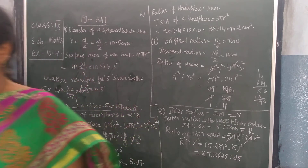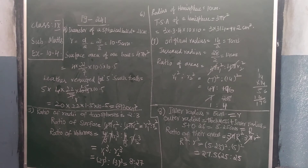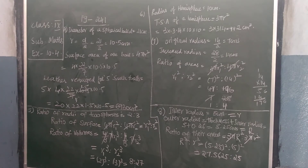7th problem, see children. The 7th problem is: original radius. They have blown air into a balloon. First when they have blown air into a balloon, its radius was 7 cm. How did they find out 7 cm? From the diameter.